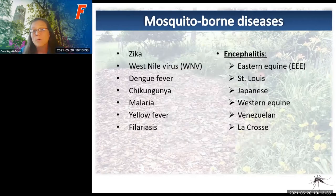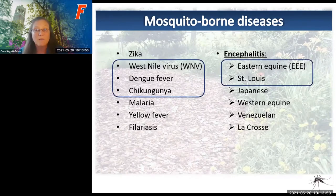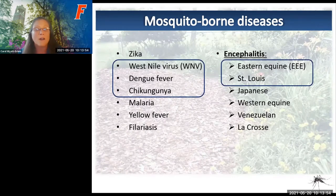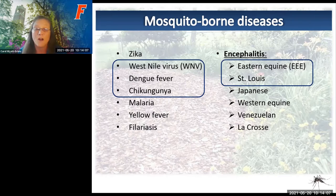Mosquito-borne diseases include illnesses vectored by mosquitoes that can infect people and animals. West Nile virus, dengue fever, and chikungunya are the most common in Florida, but malaria, yellow fever, and filariasis have also been found here. When we say mosquitoes are the deadliest animal in the world, it's because they vector a whole host of deadly diseases.